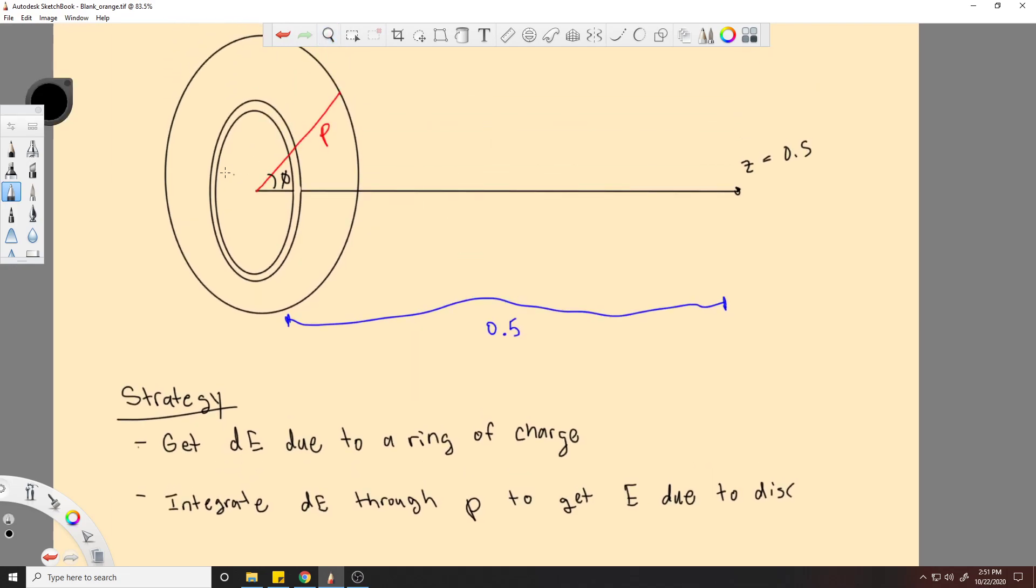So basically, if we get one of these rings, right, we can integrate through all the rings going out in the circle, and that will get us a disk of charge. Similar to like when you do a line charge or anything else, it's the same idea. You always get a small piece of it and then integrate through.